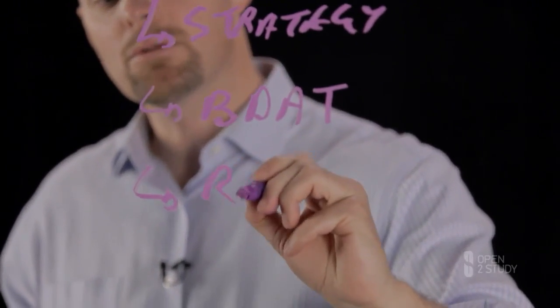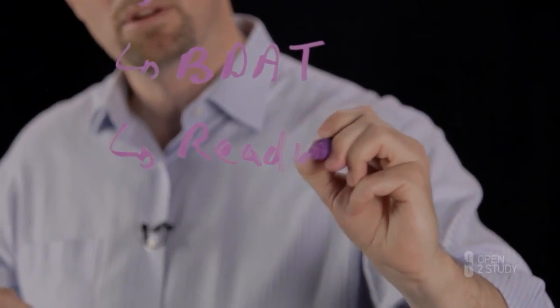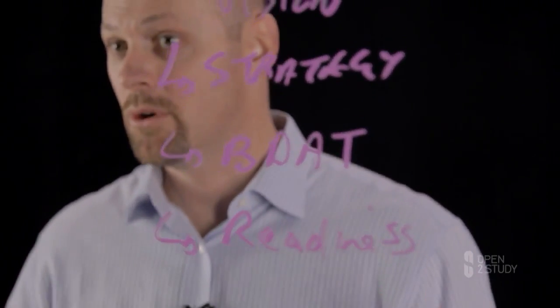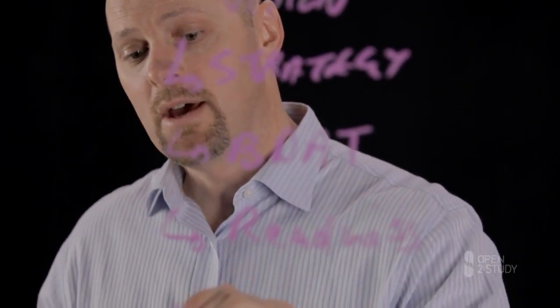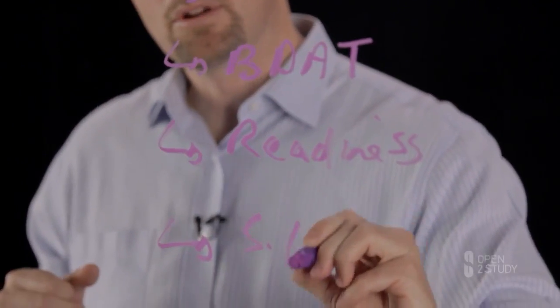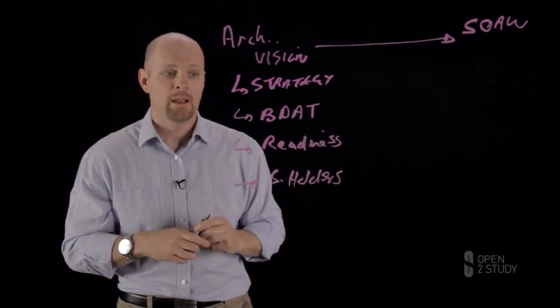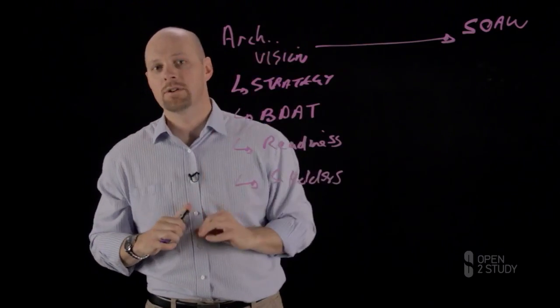It also looks at readiness or change readiness—how ready is the business to accept some of these changes, and are we biting off more than we can chew with a kind of boil-the-ocean approach? Then finally, it also looks at stakeholders—who are my stakeholders within this particular scope? It wraps all of this research up into an architecture vision.